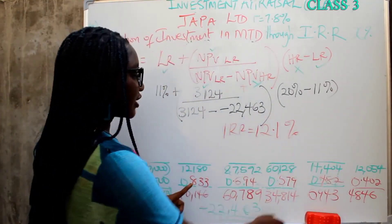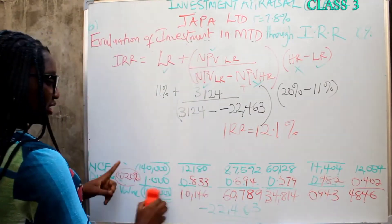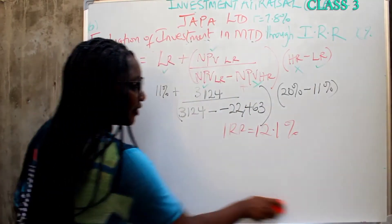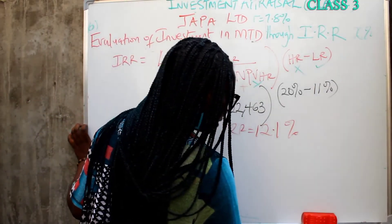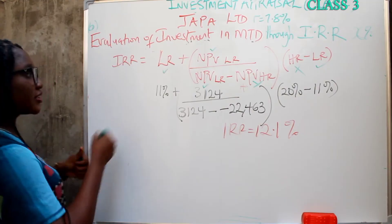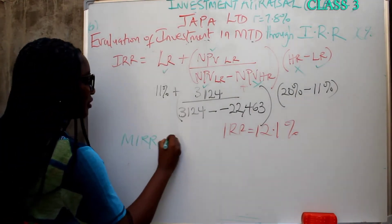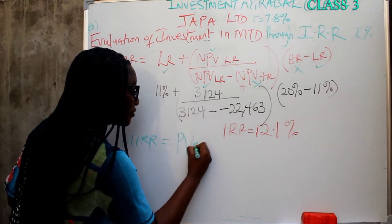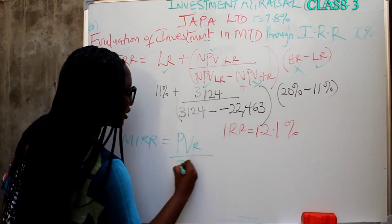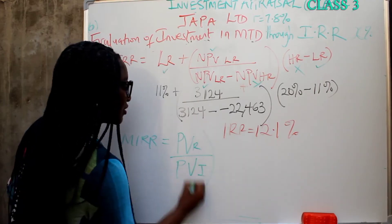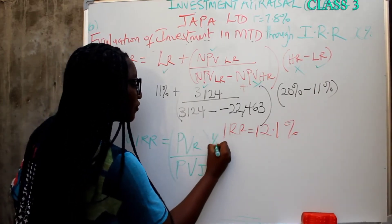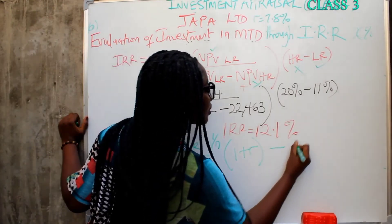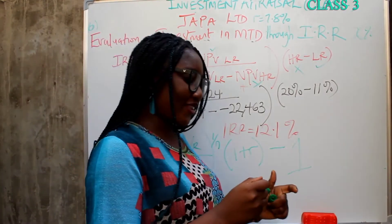The formula to calculate your MIRR is: MIRR equals the present value of the revenue phase over the present value of the investment phase, all raised to the power of 1 over N, into 1 plus R, minus 1. It's a very simple formula.